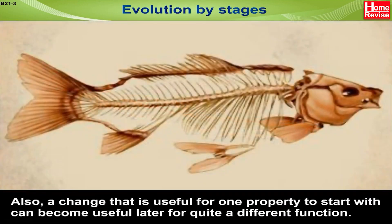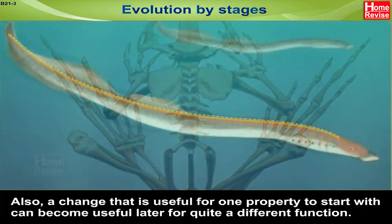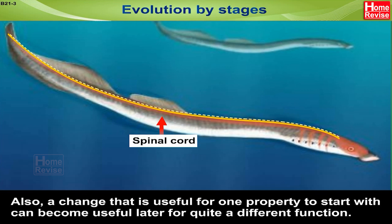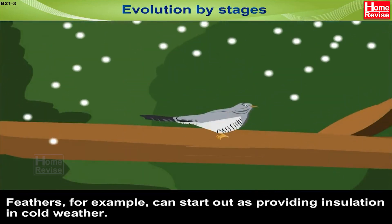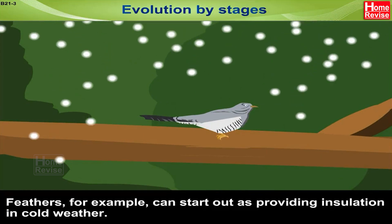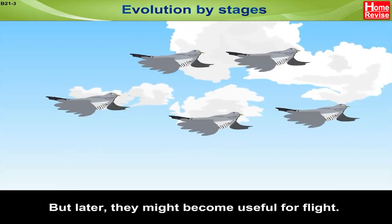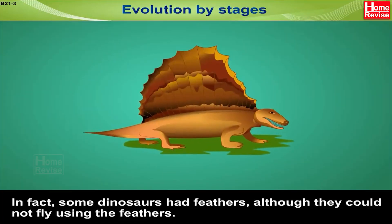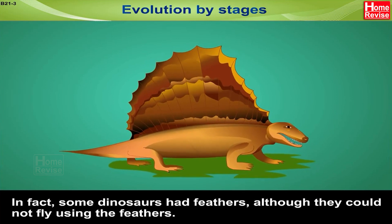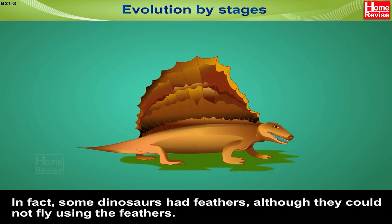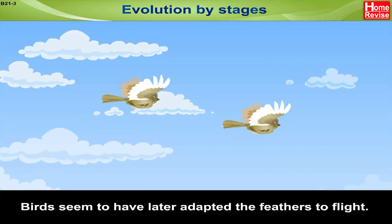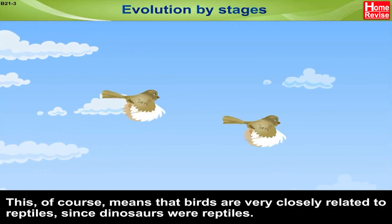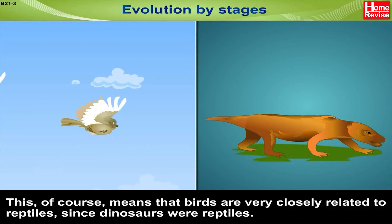A change that is useful for one property to start with can become useful later for quite a different function. Feathers, for example, can start out as providing insulation in cold weather, but later they might become useful for flight. In fact, some dinosaurs had feathers, although they could not fly using them. Birds seem to have later adapted the feathers to flight. This means that birds are very closely related to reptiles, since dinosaurs were reptiles.